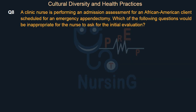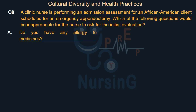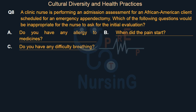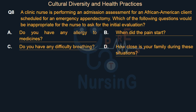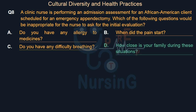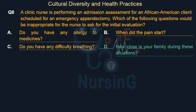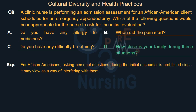A clinic nurse is performing an admission assessment for an African-American client scheduled for an emergency appendectomy. Which of the following questions would be inappropriate for the initial evaluation? Option A: Do you have any allergy to medicines? Option B: When did the pain start? Option C: Do you have any difficulty breathing? Option D: How close is your family during these situations? For African-Americans, asking personal questions during the initial encounter is prohibited as it may be viewed as interference.